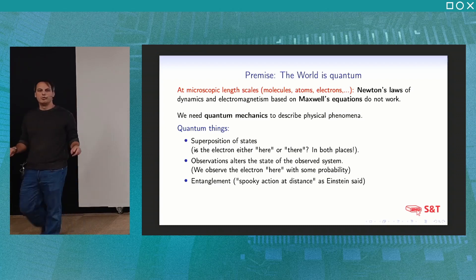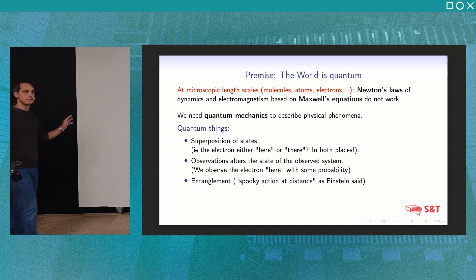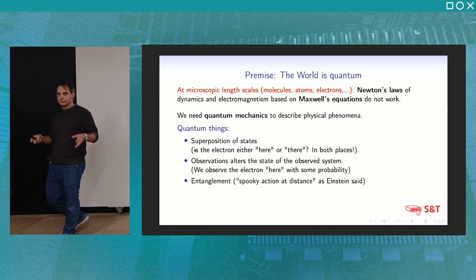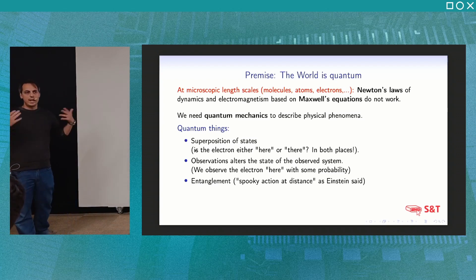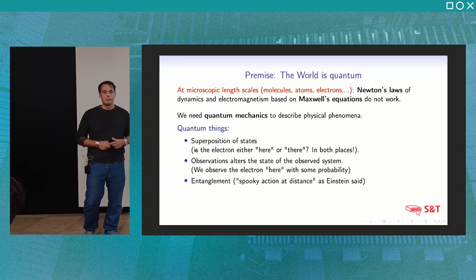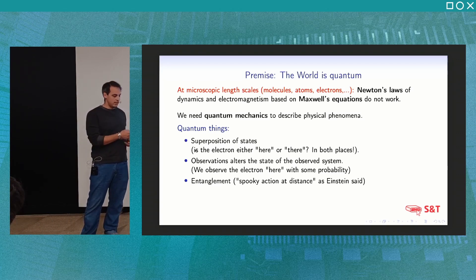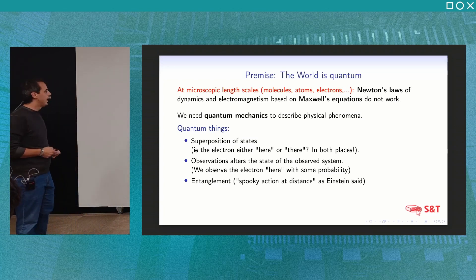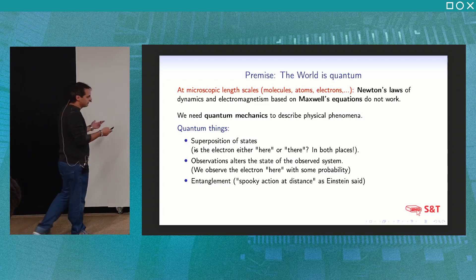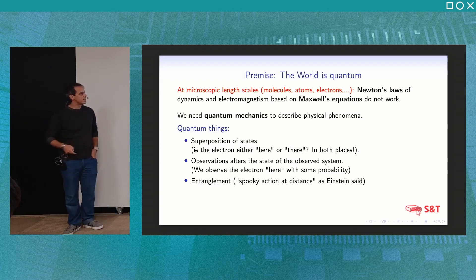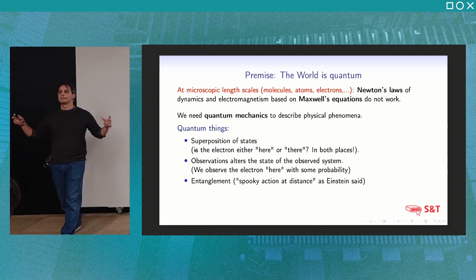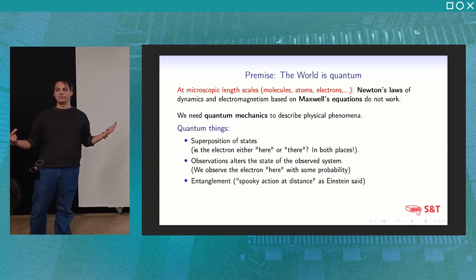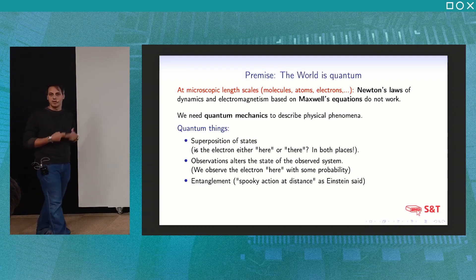We also have the nice phenomenon of entanglement — a kind of non-classical correlation between quantum systems. After the talk we can make the discussion as technical as we want. Entanglement was called by Einstein 'spooky action at a distance' because we have this non-local phenomenon in quantum mechanics, apparently in contradiction with Einstein's locality.